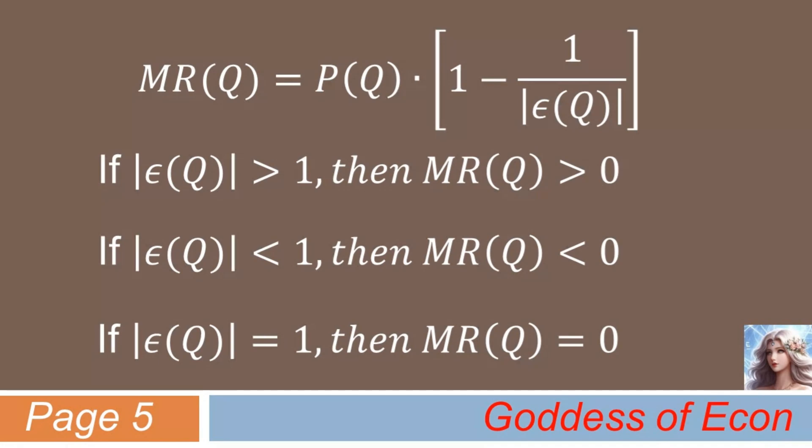What this all means is that at the point where the absolute value of epsilon is greater than 1, as the firm produces more, the revenue keeps increasing. By contrast, at the point where the absolute value of epsilon is less than 1, as the firm produces more, the revenue keeps decreasing. Hence, in order to increase revenue, the firm will need to decrease production in this case.